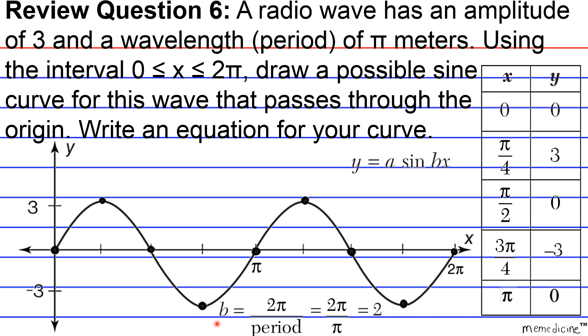So again, the frequency b is equivalent to 2π divided by the period. 2π we're given, and we're told that our period is π meters. And then when we simplify, we wind up with our b value being 2. So that's what we're going to plug in right here, and here we're going to plug in 3. So a possible equation for this graph is going to be y = 3 sin(2x).